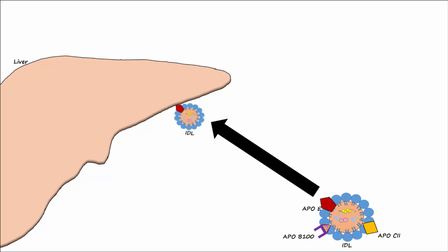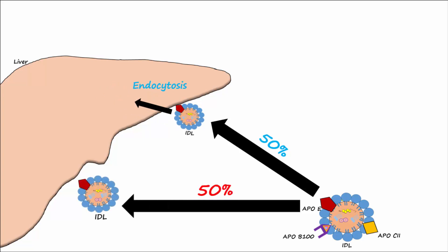About 50% of the IDL enters the liver by way of endocytosis and is broken down. The other 50% of IDL is acted upon by hepatic lipase, which removes triglycerides to become LDL.